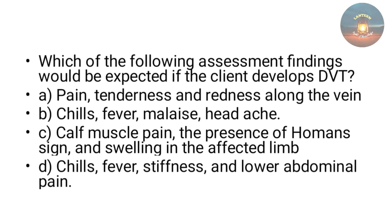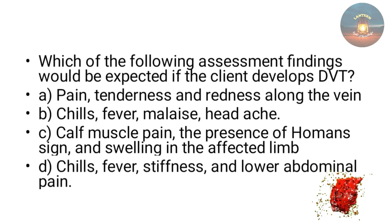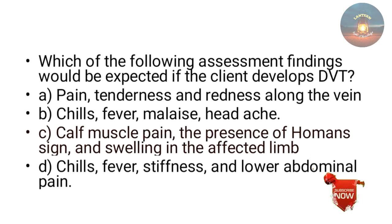Which of the following assessment findings would be expected if the client develops DVT — pain, tenderness and redness along the vein; chills, fever and malaise; headache; or calf muscle pain, presence of Homans sign, and swelling in the affected limb? The answer is calf muscle pain, presence of Homans sign and swelling in the affected limb. Homans sign is an important sign of DVT.